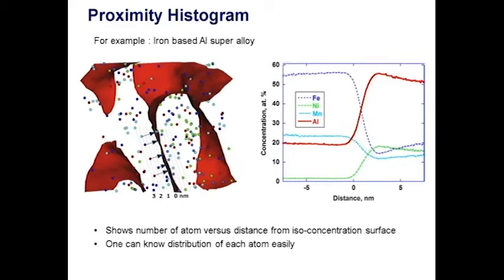So, with these two techniques, iso-concentration surface and proximity histogram, analysis for APT measurement data can be more quantitative.